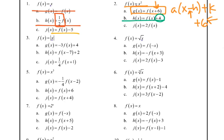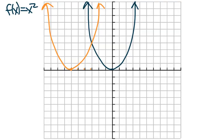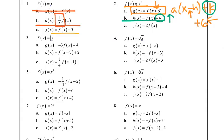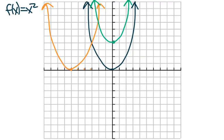For b, it's plus 4 and it's outside the parentheses, so that's k, which moves it up or down — so it would move it up 4, and we'd have that same basic shape. Now c is 2 times f(x), so that's the a. It's greater than 1, which means it's a vertical stretch — we take that same vertex and make it basically skinnier by about double. The main point is that it's just skinnier.